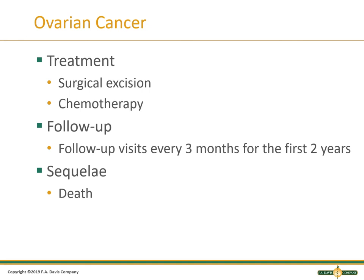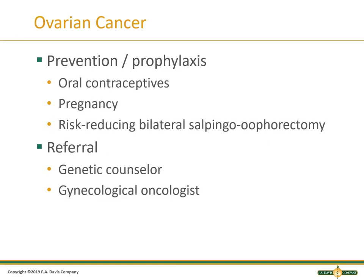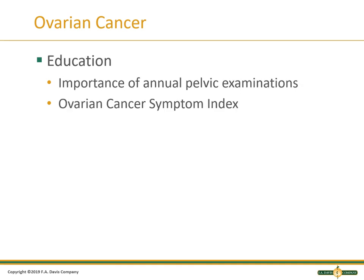Treatment is surgical resection and chemotherapy. Hematology-oncology or GYN oncology will be directing this. Follow-up visits every three months are likely with them but may also be with you, and unfortunately the end result with ovarian cancer is often death. Prevention and prophylaxis: screening, risk-reducing strategies, pregnancy, and oral contraceptives — we see less cancer risk in women who have had babies and have been on birth control. Refer to a genetic counselor, gynecologist, or oncologist, as these are the specialists who manage these cases. Education is so important: the importance of annual pelvic exams and looking at anything abnormal. There is an ovarian cancer symptom index that you can download — they have pamphlets and materials available for patient education.